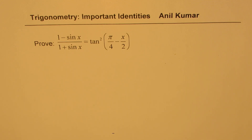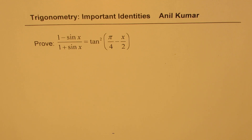We need to prove that 1 minus sin x over 1 plus sin x is equal to tan squared of pi by 4 minus x by 2. You can always pause the video, solve this question, and then look into my suggestions.